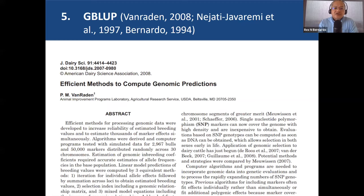Paul VanRaden developed methods to efficiently compute genomic predictions, and this has been widely adopted in the animal breeding world — to the extent that today it has been argued, and I believe it is true, that GBLUP is the genetic evaluation method most widely used in livestock improvement today.